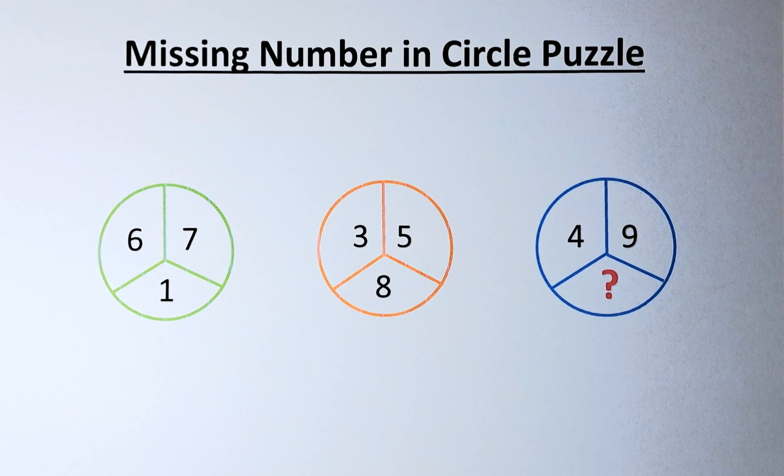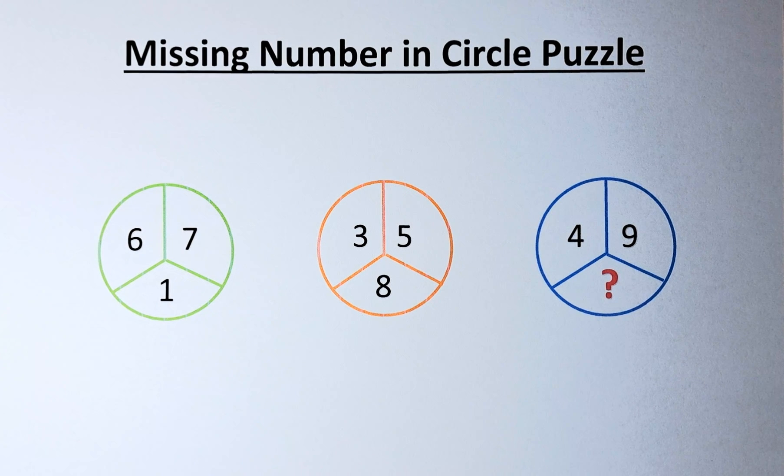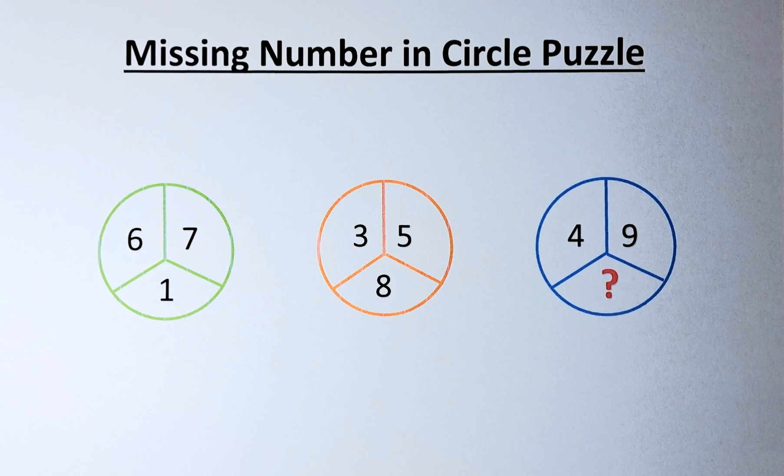Welcome back! This is the solution to finding the missing number in the circle puzzle. As I said earlier, it is not number 2 because 2 is the only number that is missing from 1 to 9 in this puzzle. So, without further ado, let's solve this puzzle.